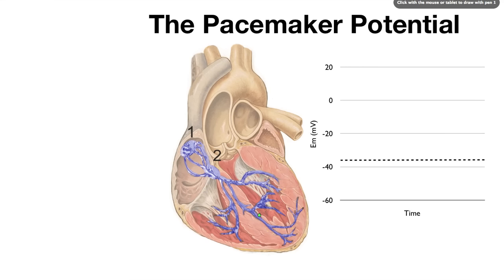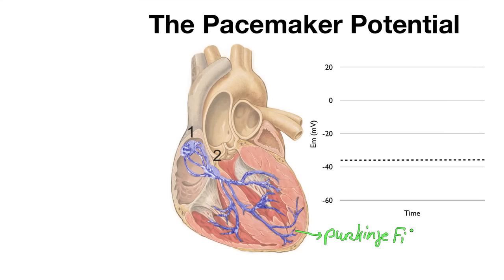In addition to the SA node and the AV node, we have some fibers that extend from the AV node and spread throughout the ventricle. Those fibers are called Purkinje fibers. These are also very important in that they spread that signal throughout the rest of the ventricle.